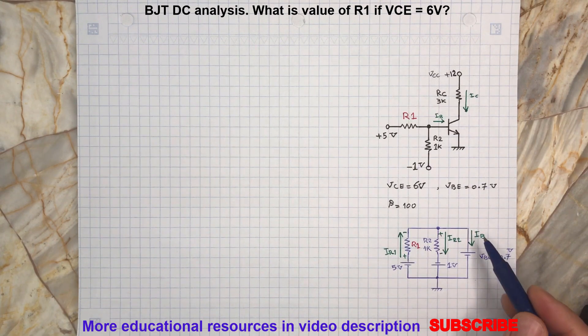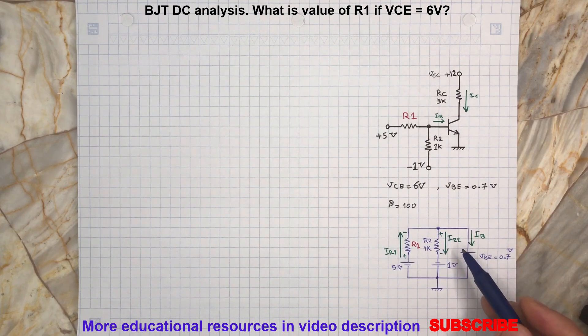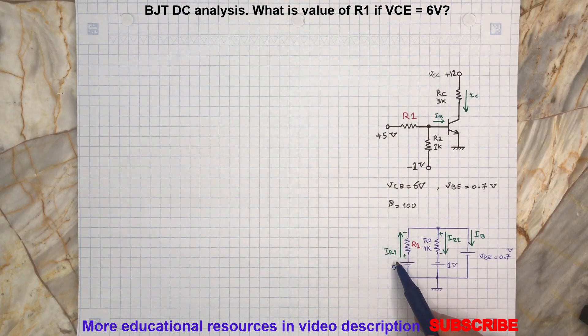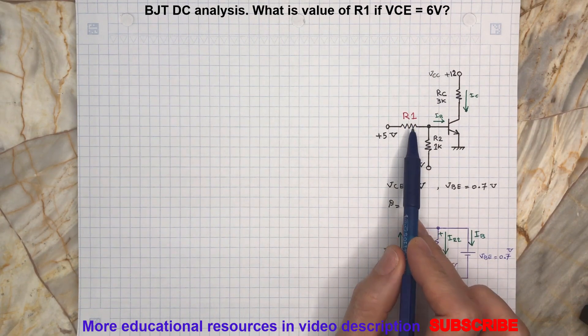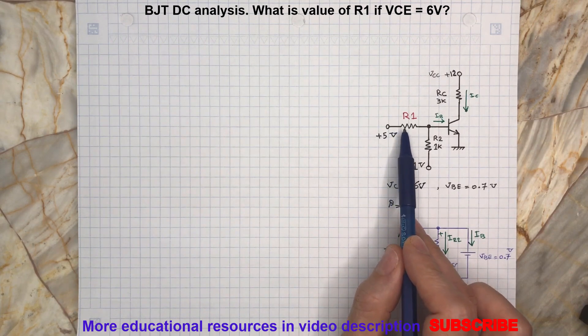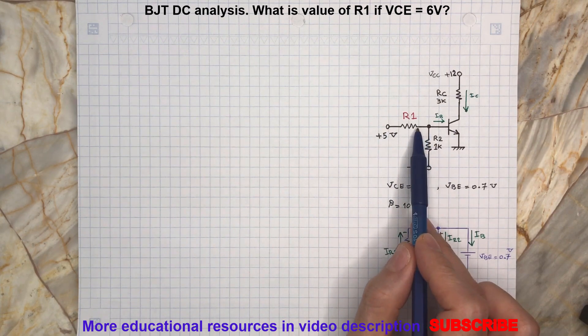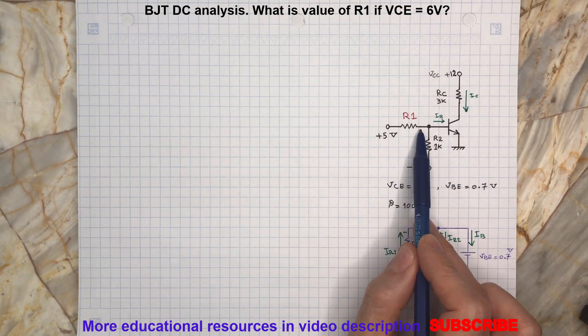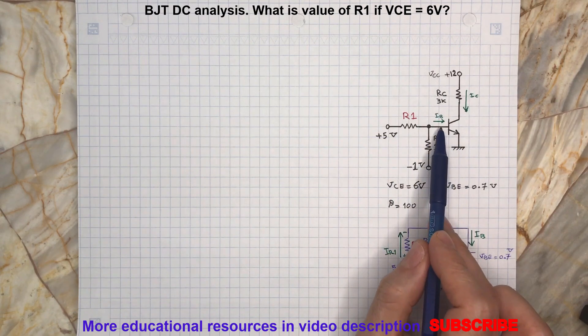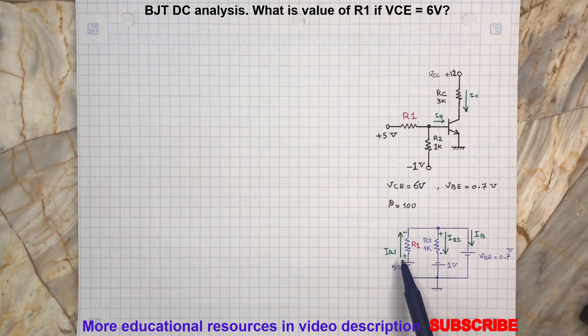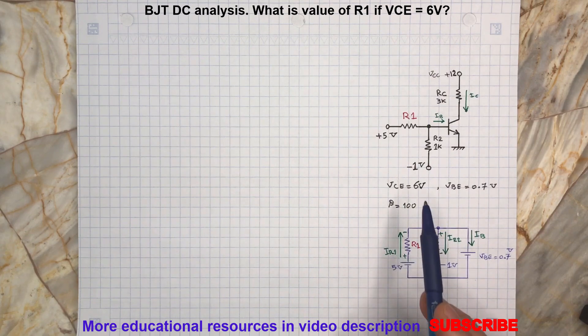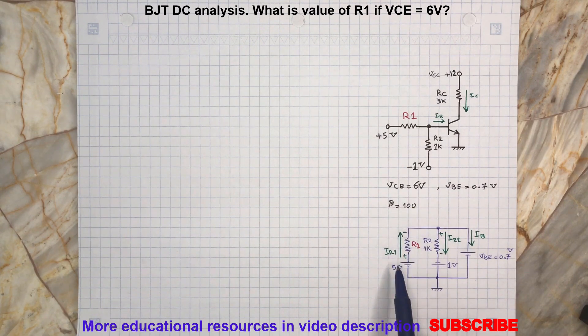For simplicity we can call this current IB and this current IR2 and this current IR1. To find the value for R1 we will need to know the voltage at these two terminals for the R1 and also the current flowing through the R1. So voltage is kind of known because we know that the base emitter is 0.7 volt and here we have 5 volt but we don't know the current which is going to be this current IR1. So the idea here in this example is to find IR1.